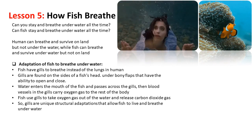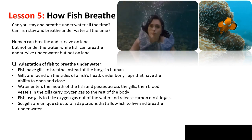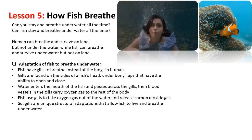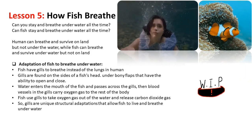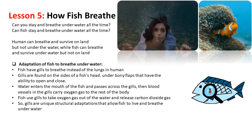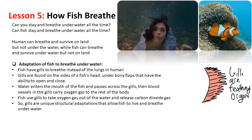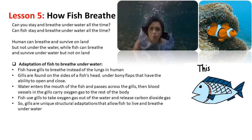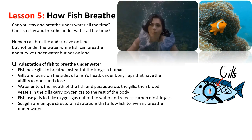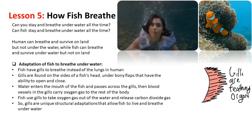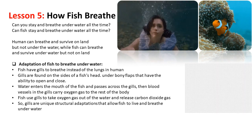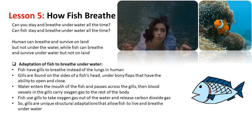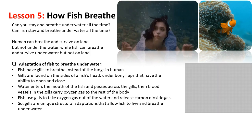Adaptation of fish to breathe underwater — fish have gills to breathe instead of lungs. Gills are found on the sides of a fish's head, under bony flaps that can open and close. Water enters the mouth of the fish and passes across the gills, then blood vessels in the gills carry oxygen gas to the rest of the body. Fish use gills to take oxygen gas out of the water and release carbon dioxide gas. Gills are unique structural adaptations that allow fish to live and breathe underwater.